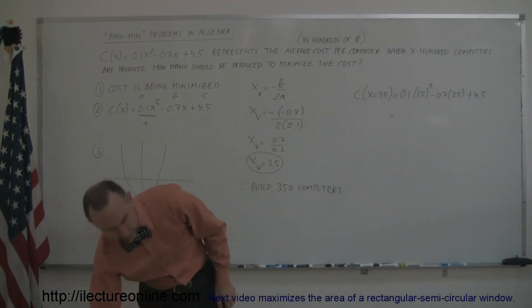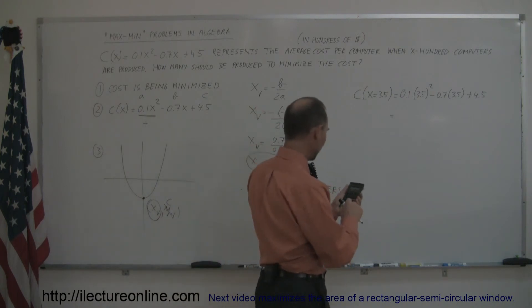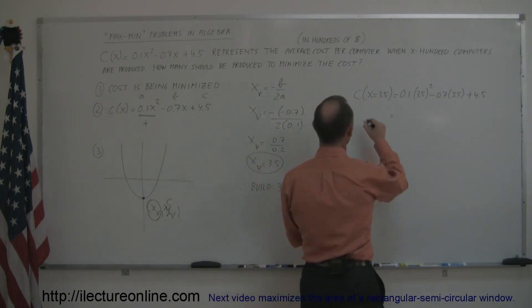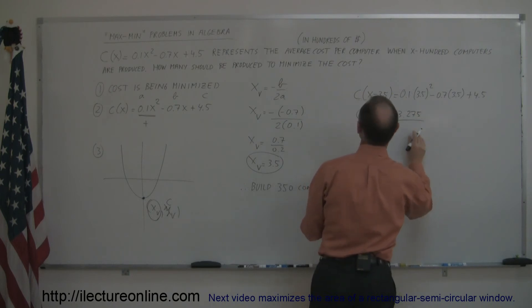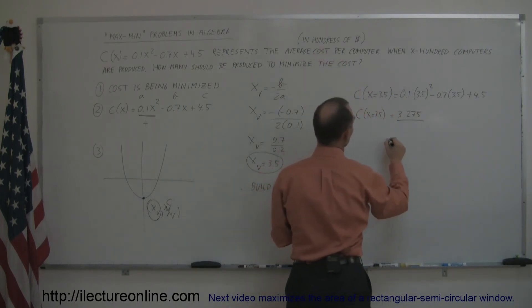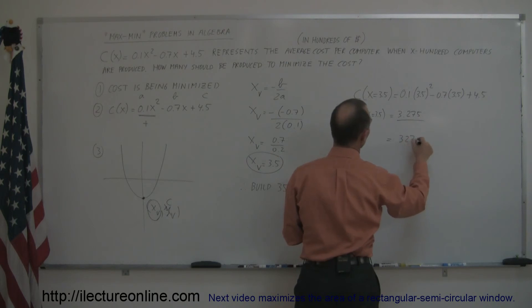I think I'm going to grab a calculator to do that. So we have 3.5 squared, we multiply that times 0.1, we subtract from that 0.7 times 3.5, and then we add to that plus 4.5. And so the cost when x is equal to 3.5 is equal to 3.275, which is in hundreds of dollars, so therefore the minimum cost is 327.5 dollars.